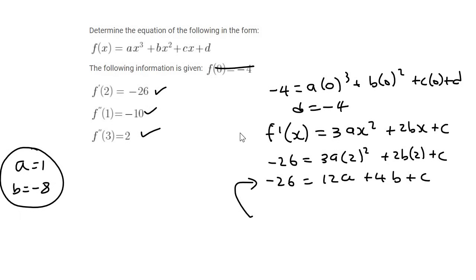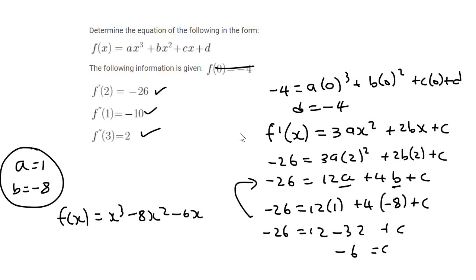Now what we do is when we have a and b, we can now go back to another equation such as this one, for example. And we can find c because we've got a and we've got b. So we can say minus 26 is equal to 12 times 1, for that's a, plus 4 times minus 8, which is b. And that's going to give you minus 26 equals 12 minus 32 plus c. And if you had to go work out c, you're going to end up with minus 6. Now we have everything. So we can say f of x is equal to a, which is just 1. So I'm just going to leave it like that. Minus 8x squared minus 6x and then d is minus 4. And that's how you do it.